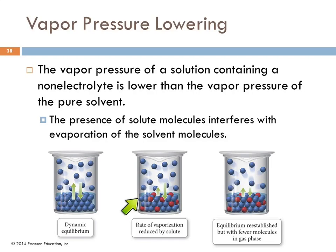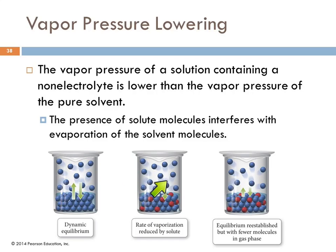Think of it like playing Red Rover—the solute molecules are like people standing in front of the Red Rover line, so the solvent can't even get to it to break through. The effect is that the rate of evaporation is lowered. With less evaporation, the rate of condensation stays roughly the same, so more molecules condense than evaporate, and we end up with fewer gas particles and a lower vapor pressure.